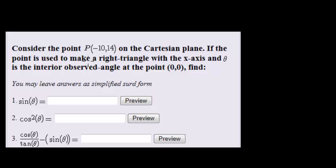Consider the point P and P is the coordinate negative 10, 14 on the Cartesian plane. If the point is used to make a right angle triangle with the x-axis and theta is the interior observed angle at point 0 comma 0, find... Okay, so let's first draw it and see if we can figure it out.